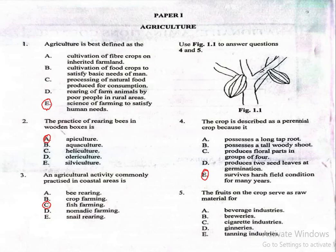Question number 5 says, the fruits on the crop serve as raw material for: A. Beverage industries, B. Breweries, C. Cigarette industries, D. Ginners, E. Tanning industries. The correct answer is A, beverage industries.